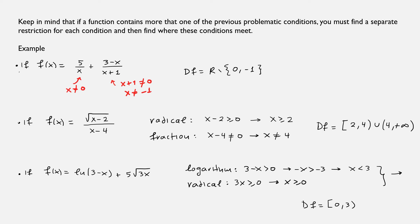In the second combined example, f(x) = √(x − 2) / (x − 4). For the radical: x − 2 ≥ 0, so x ≥ 2. For the fraction: x − 4 ≠ 0, so x ≠ 4. Combining both restrictions, we need x ≥ 2 but x ≠ 4, which gives the domain [2, 4) ∪ (4, +∞).